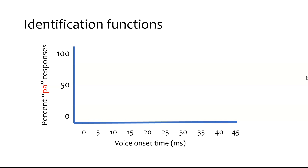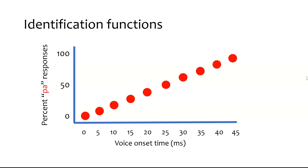Every time a sound is played, if I play one with zero milliseconds voice onset time, zero percent of the time you call it PA, because that's a voice onset time way too short — you're going to call that BA every time. And if I play a very long voice onset time, then almost every time you're going to call it a PA. So if we perceived continuous differences across this range of voice onset times, our response function would look like a straight diagonal line — as we slightly change the VOT, our perception should also slightly change. But this turns out not to be how results actually appear.